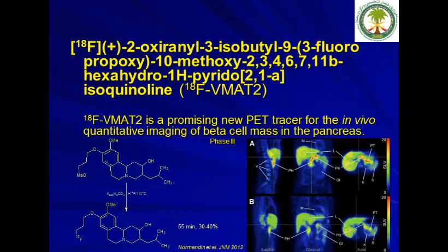F18-VMAT2 is a promising new PET radiotracer for quantification imaging of beta cell mass in the pancreas, currently in clinical trial phase 3. Both VMAT2 and Amyvid were developed by AVID Radiopharmaceuticals, which was acquired by Eli Lilly for almost $850 million. Amyvid is useful for diagnosing Alzheimer's patients, but Eli Lilly likely acquired the company to monitor treatment effects since they have no drugs for Alzheimer's treatment. This tracer can be produced easily in 55 minutes with good radiochemical yield.